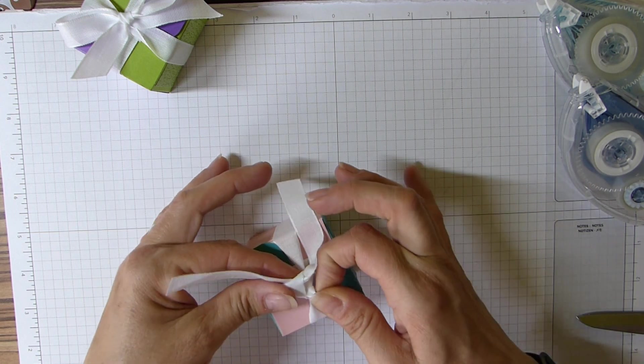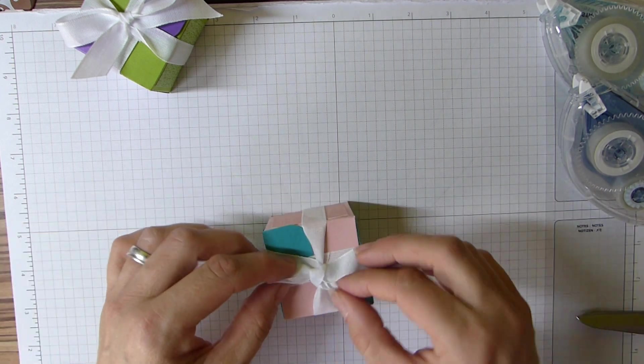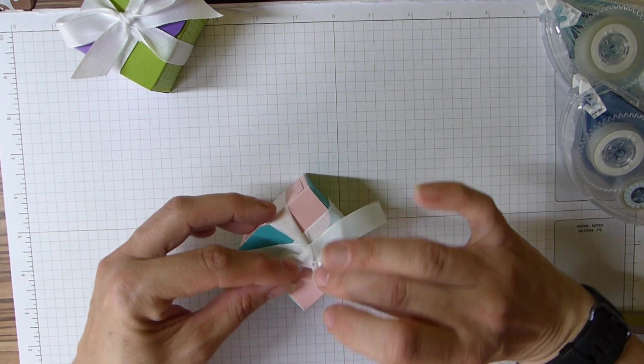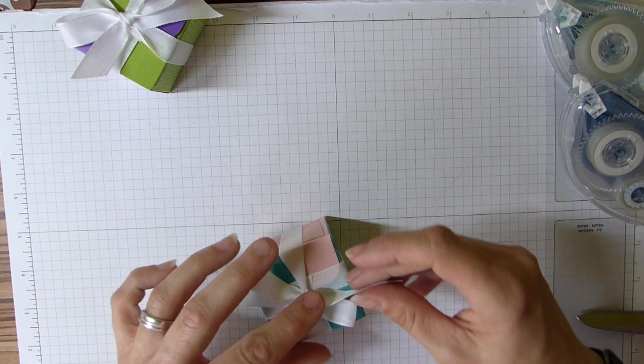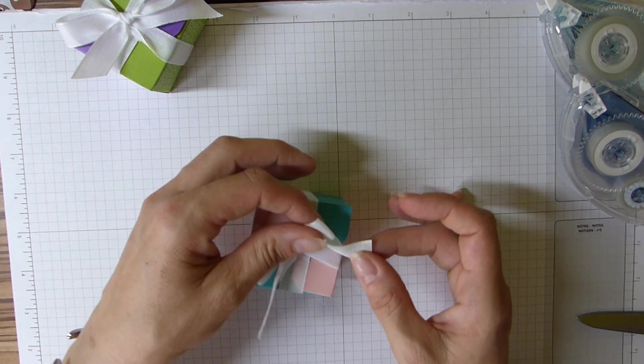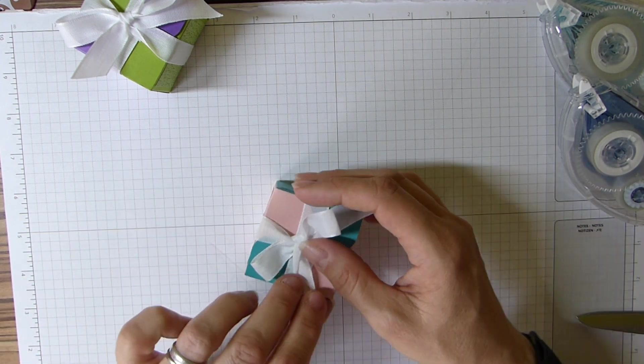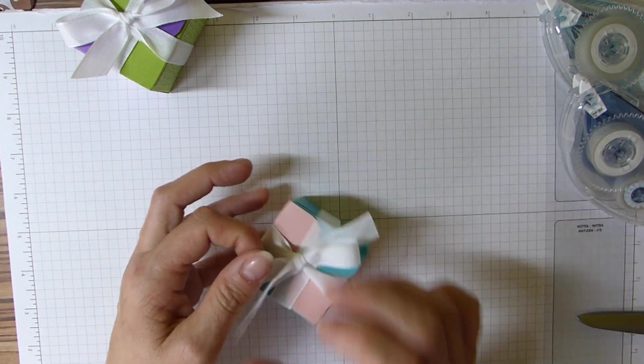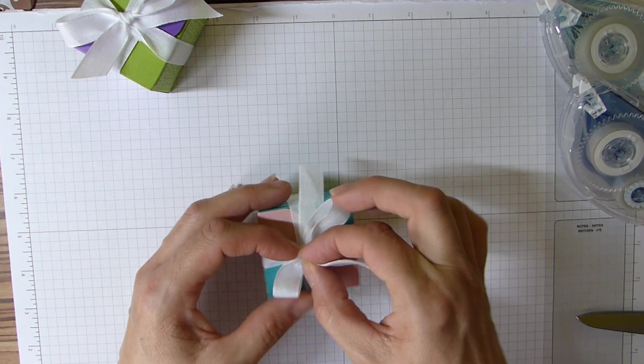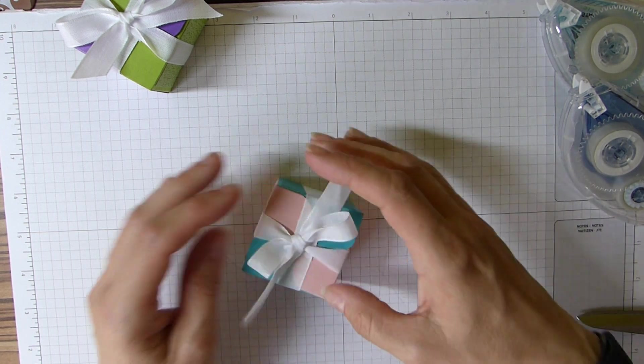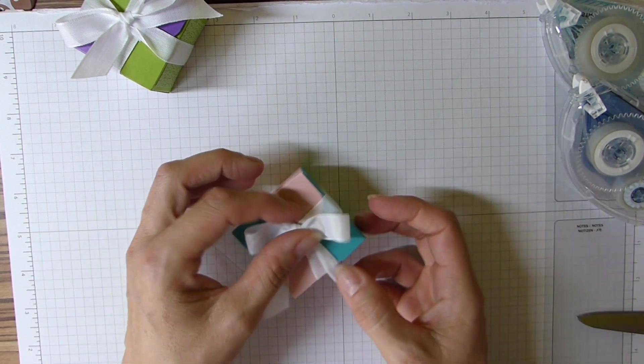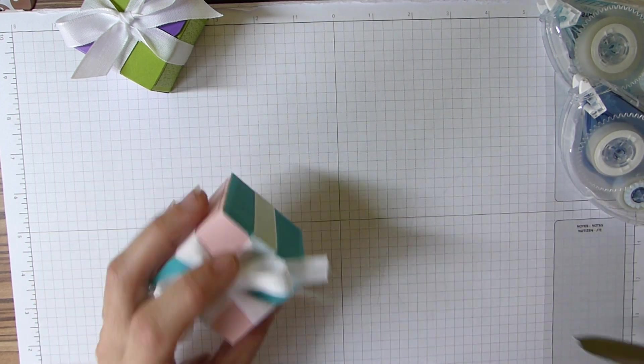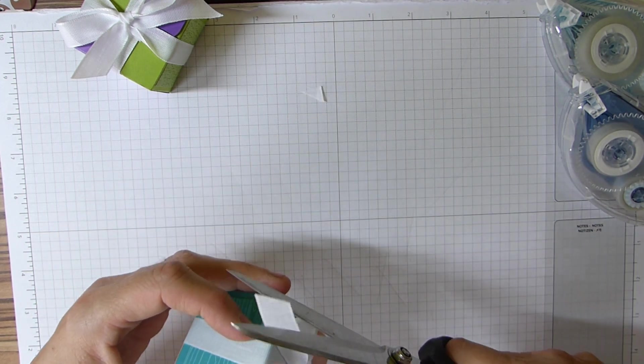There we go. Look at that bow. Do you see what I mean? It is such an easy ribbon to make a bow with, so anybody that struggles with bows, seriously have a go with this ribbon because it's beautiful. Right, I'm not going to play anymore. Cut those.